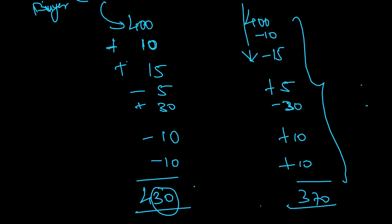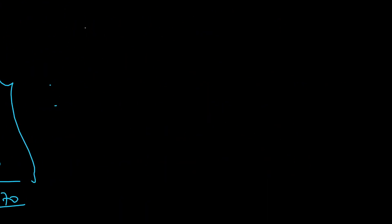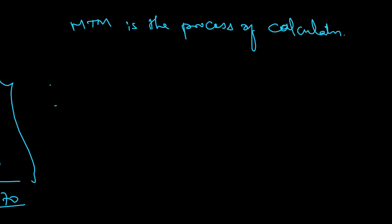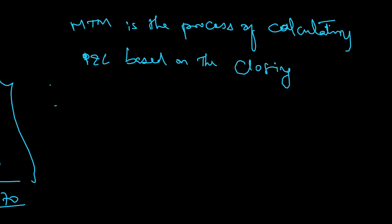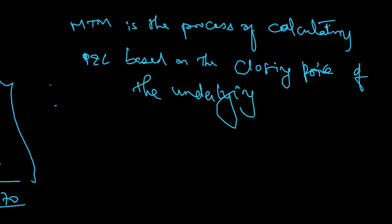So practically, this is what happens. This process of daily settlement based on the closing price is called mark-to-market. To articulate it: mark-to-market is the process of calculating profits and losses based on the closing price of the underlying asset. So this is mark-to-market — thank you, thanks for your time.